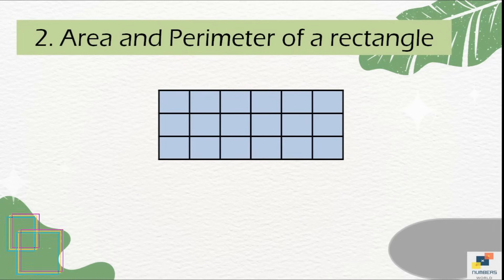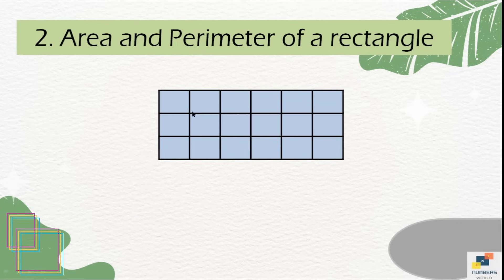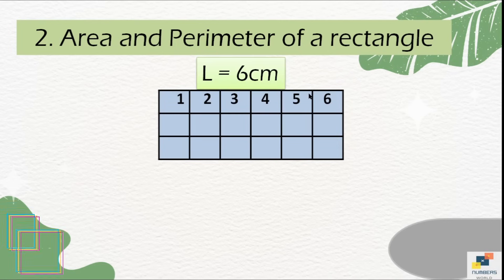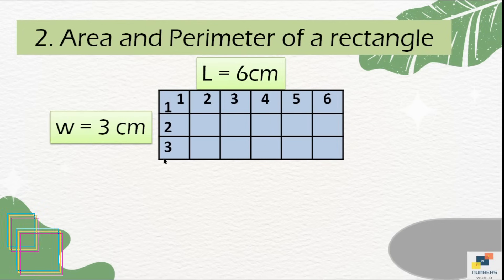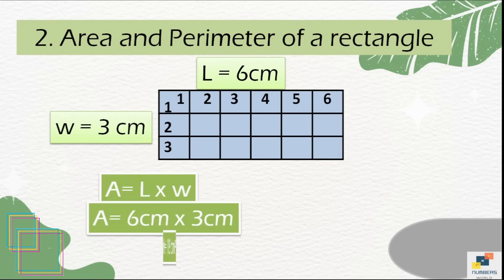In the second type of question, area and perimeter of a rectangle must be found but no measurements are labeled — only a grid is given. Count the number of columns first: there are six, so length equals 6. Then count the rows starting from the first box: one, two, three — so width equals 3. Now we have length and width.